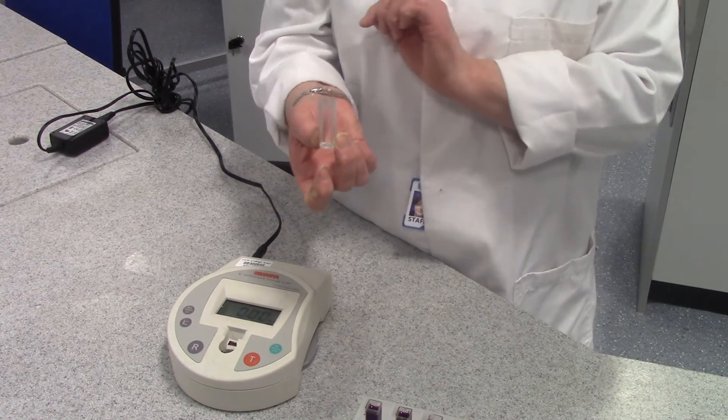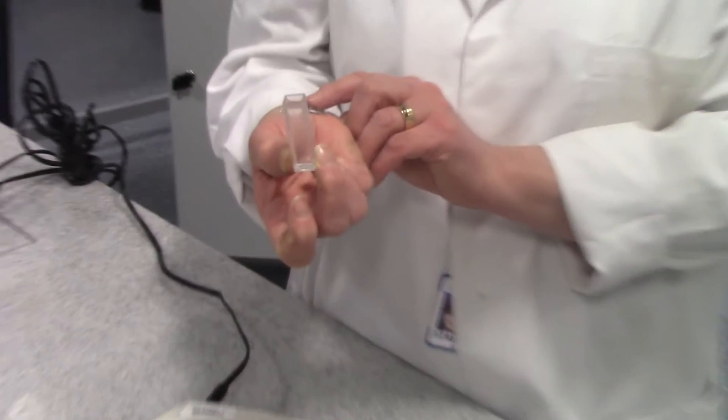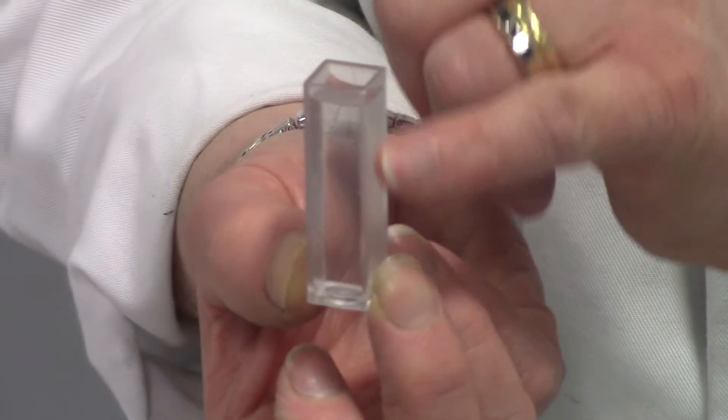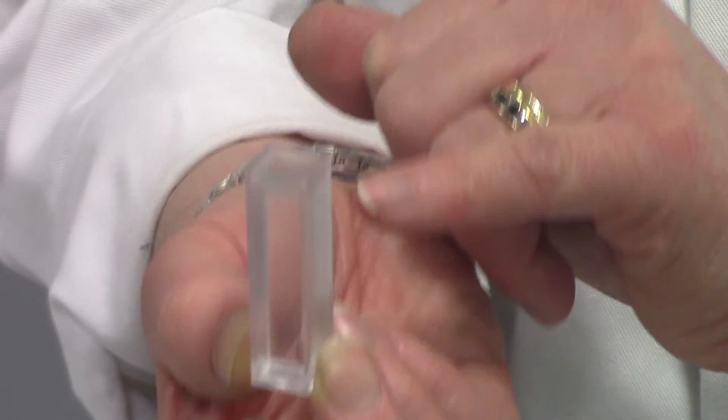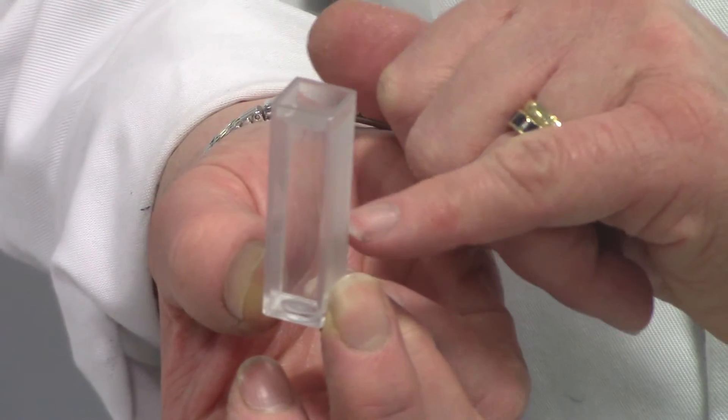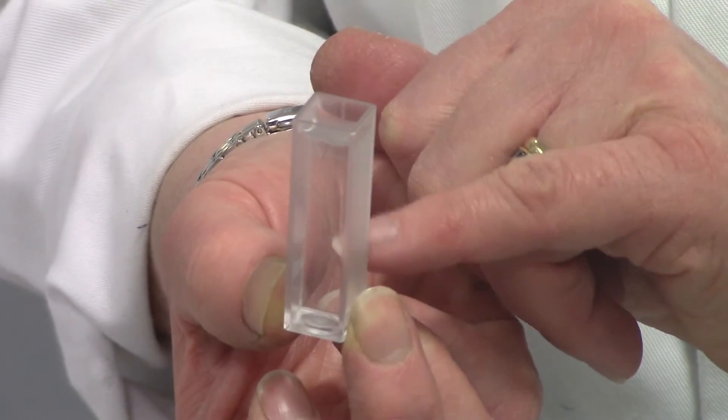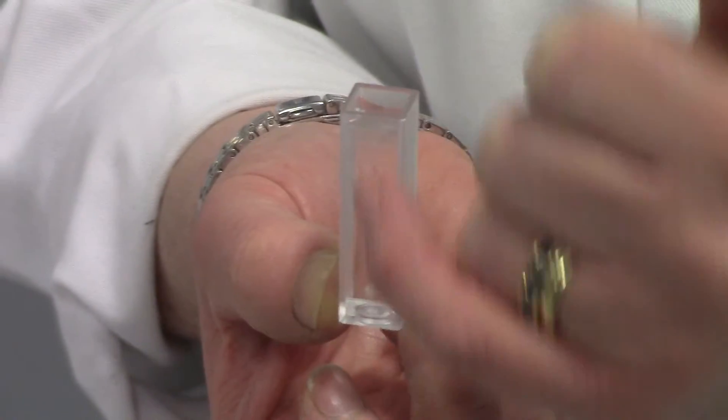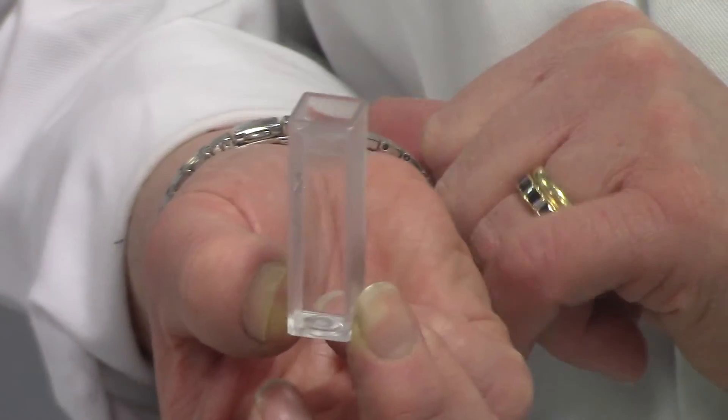The cuvette is a square tube and it's got two transparent sides and two slightly opaque sides. When you're using it, you have to be very careful that you only handle the opaque sides. You need to make sure you don't get any liquid or any dust or smudges on the clear transparent sides because this is the way that your light is going to shine through.